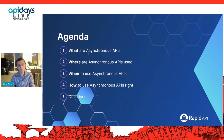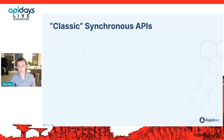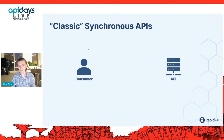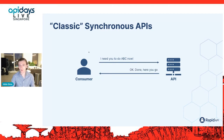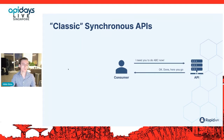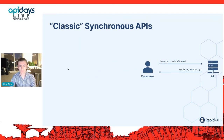Going back to synchronous APIs — the typical concept we think about when we talk about APIs — it's a very simple model. You have the consumer and the API. Every time you want to fetch data or make an action happen, the consumer sends a request: pull the feed, send a text message, process a payment, submit an order. And then the API responds with 'done' and returns data, or returns an error. It's a very simple transaction.